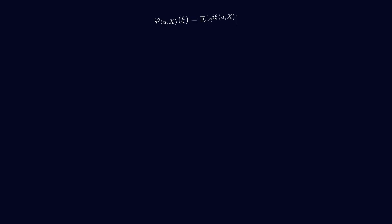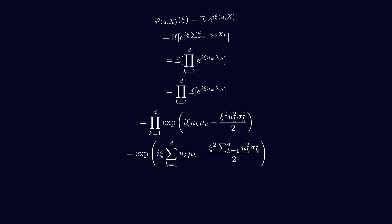Now let's prove it. First, we use the definition of the characteristic function. Then, we expand the dot product. Then, we use the property that the exponential of a sum is a product of the exponential. We then use the fact that each xk is independent. Because each xk is a Gaussian random variable, we can do this. Then, we use the reverse property that the product of exponential is the exponential of the sum. And finally, we come back to the dot product notation.